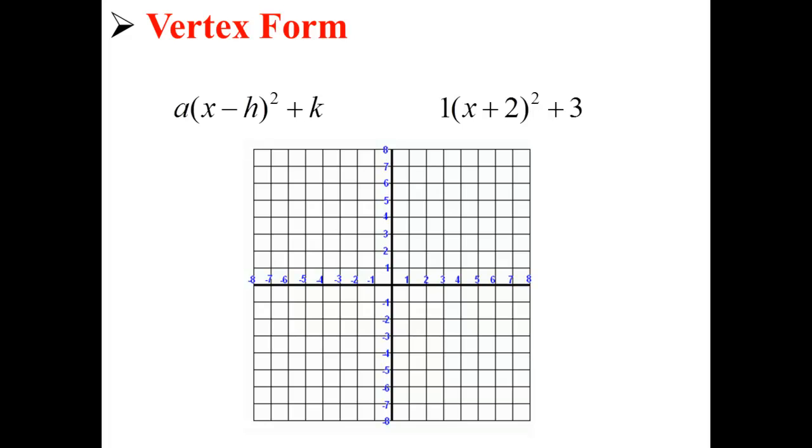Now let's actually try an example. Here we have the equation 1 times x plus 2 squared plus 3. Let's rewrite that a little bit so it's in vertex form. Now we have 1 times x minus negative 2 squared plus 3.